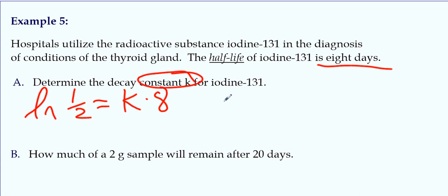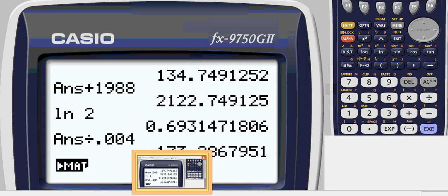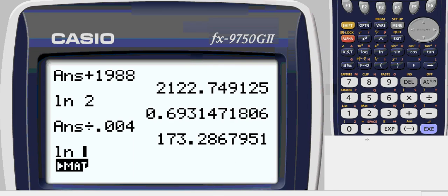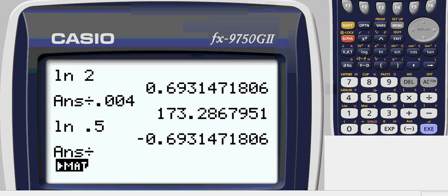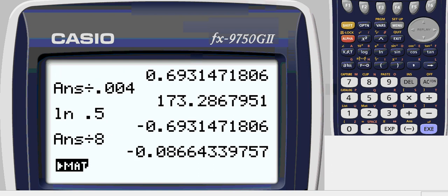So to find the constant, k, divide by eight, you get natural log of one-half divided by eight. Natural log of one-half or 0.5 divided by eight. This is our decay constant.